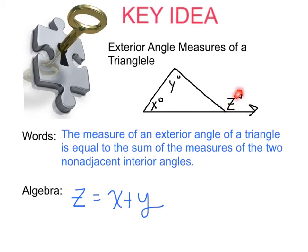The measure of the exterior angle — remember, that's the outside angle of the polygon — so in this case it would be z. z is equal to the sum of the inside angles that are not adjacent to z. z would be adjacent to this angle here that has no letter on it, so we're talking about the other two. z is going to be equal to the sum of the non-adjacent interior angles, so z equals x plus y.